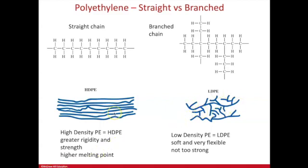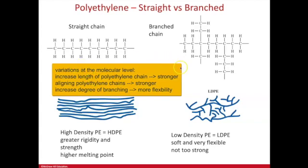Other variations that can be done include increasing the length of the chains. You can make a longer straight chain with more atoms and more mass, and basically more density — a higher density would lead to a stronger plastic. There's something called ultra-high-density polyethylene, and that's generally used for furniture.